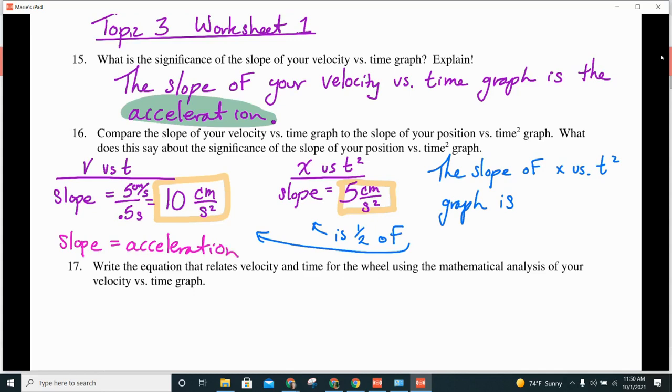So, that means that the slope of my position versus time graph, if it's half of the other one, then that means it's half of the acceleration.